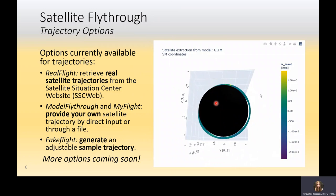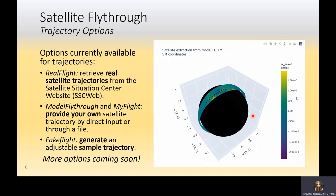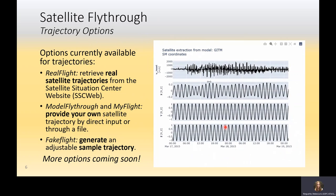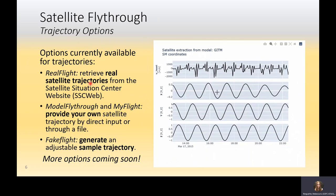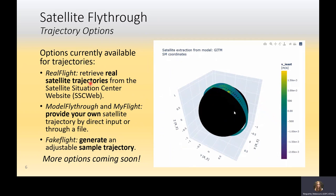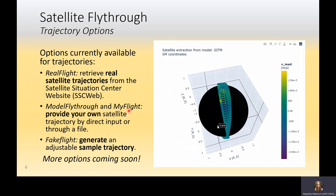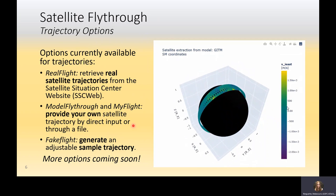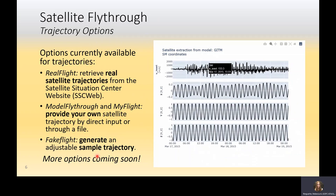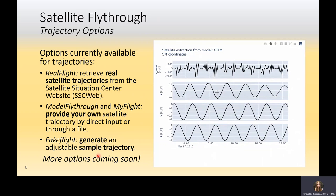All of the fly-through functions can generate the interactive visualization pictured here. There are four currently. The real flight retrieves a real satellite trajectory and flies that through the chosen model data. Model fly-through and myflight allow users to provide their own satellite trajectories and fly those through the data. Fake flight allows users to generate a sample trajectory and fly that through the chosen model data. There are more options coming soon.